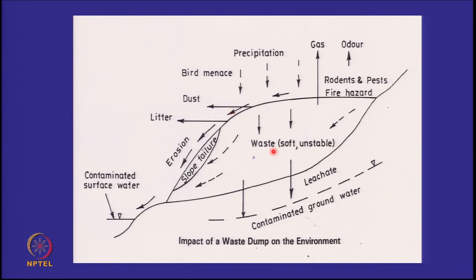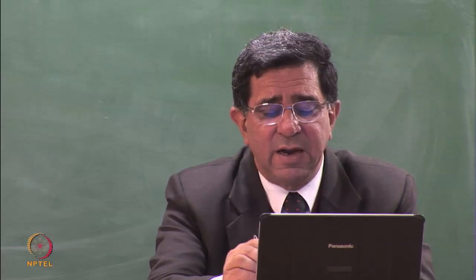The most critical issue is groundwater contamination, because everything else moves away. Gas and odour are taken away by the wind; contaminated surface water gets washed away by monsoons. But groundwater contamination just remains where it is. Consider a site where there is a water table — if I plan to put my waste here by excavating soil to make more capacity and going above ground level, I need to place the waste in such a manner that it does not impact the groundwater table.